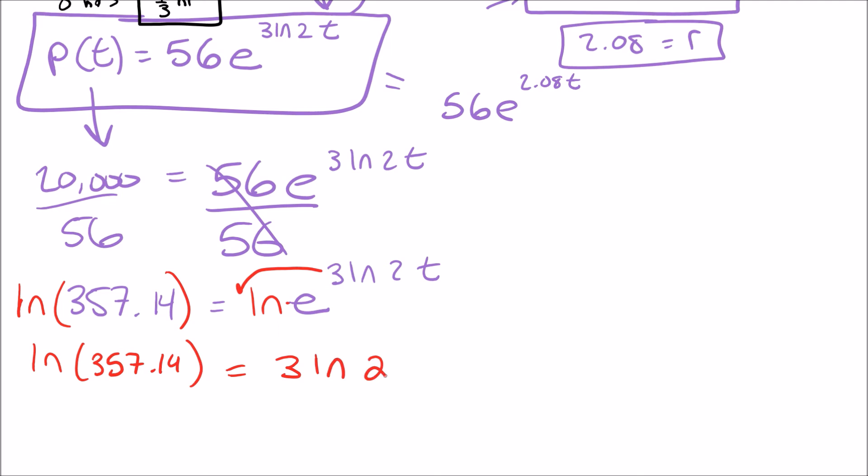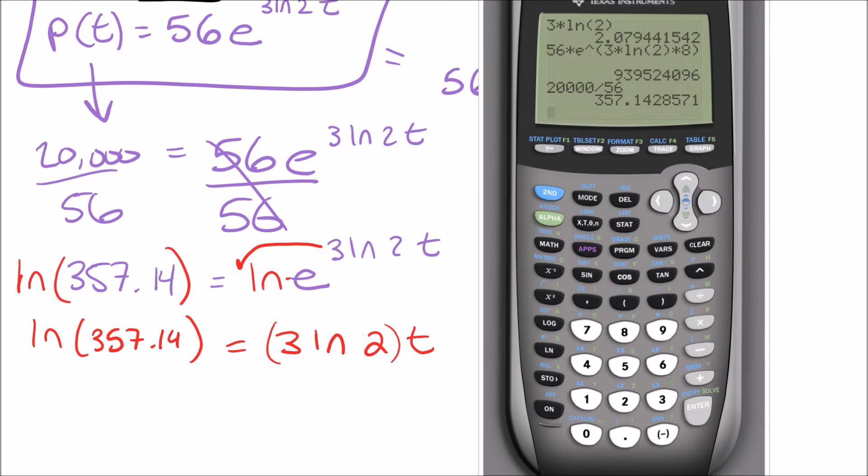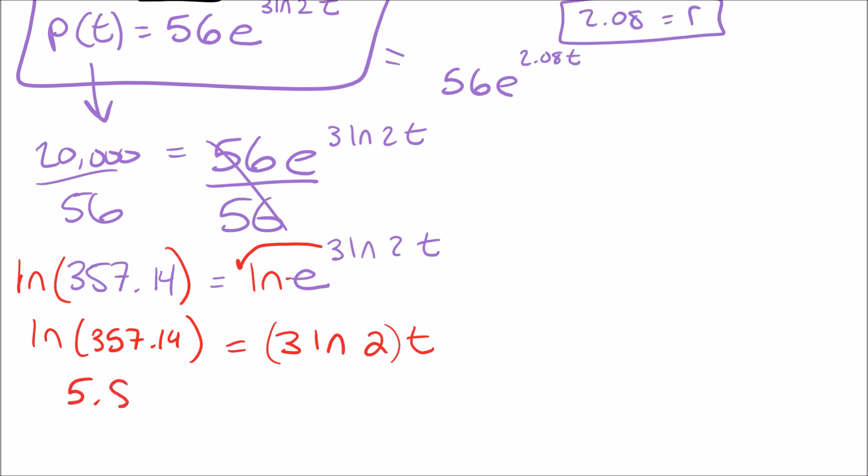And in this case here then, we're going to actually figure out what the ln of that number is. So I'm going to take the ln of that last answer there. See what that gives me. So that's about 5.878. So 5.878 equals 3 ln of 2 times t.